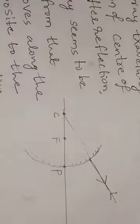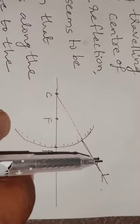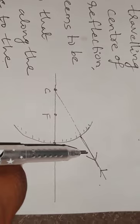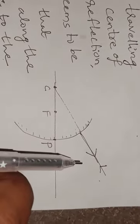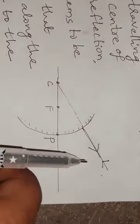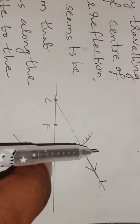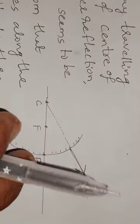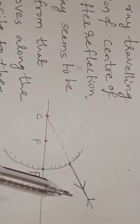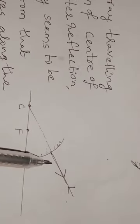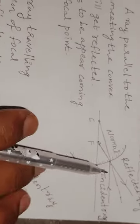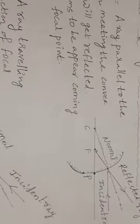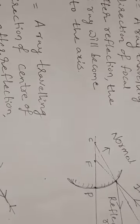For the laws of reflection: the normal, reflected ray, and incident ray all lie in the same plane; the incident ray and reflected ray lie on either side of the normal; and the angle of incidence equals the angle of reflection, which together sum to 180 degrees. All three rules obey the laws of reflection. Rule 3, Rule 2, and Rule 1 all obey the laws of reflection.